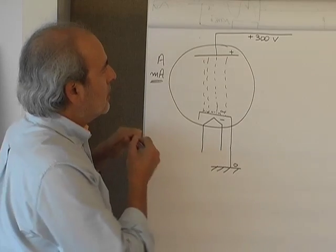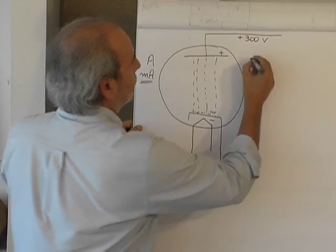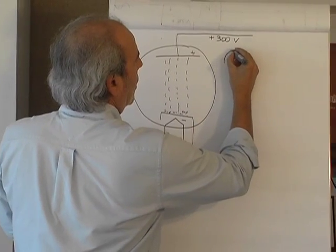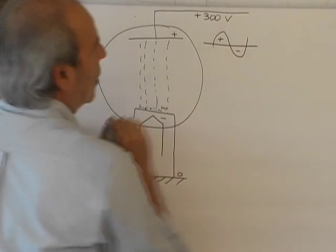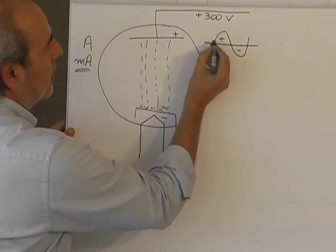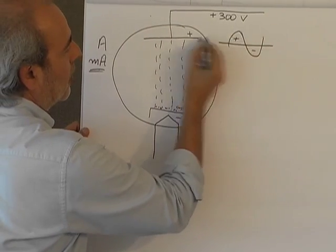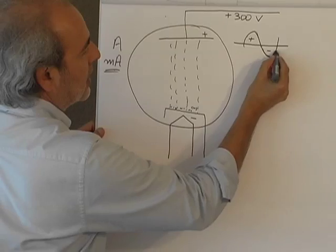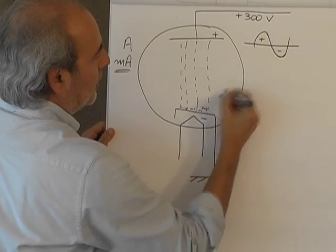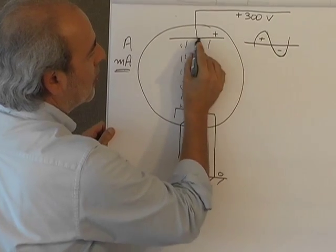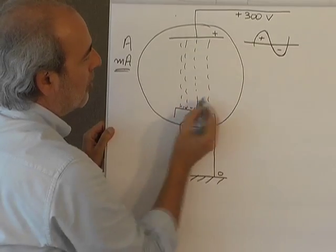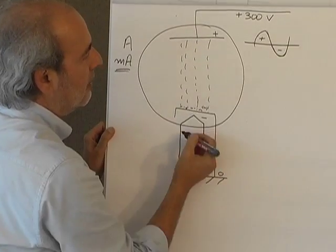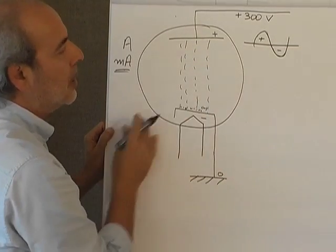So as you can see here, when the plate is turning to negative, then the negatively charged electrons will not be attracted by the plate anymore because they will be both negatives and the electric current will stop.